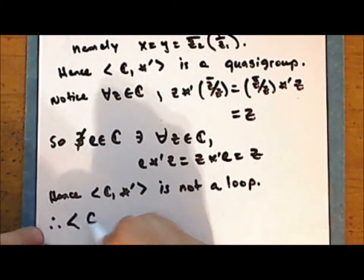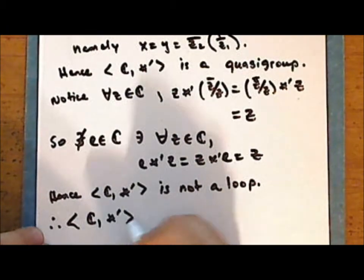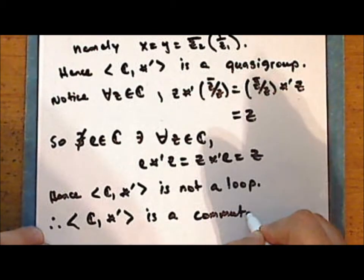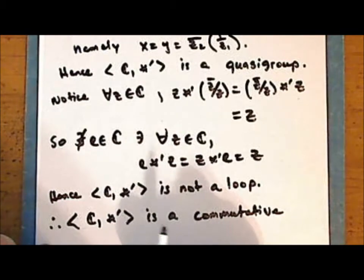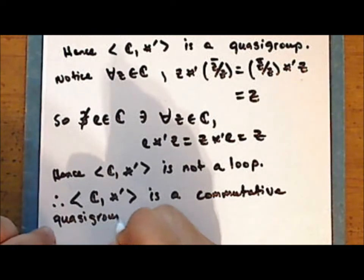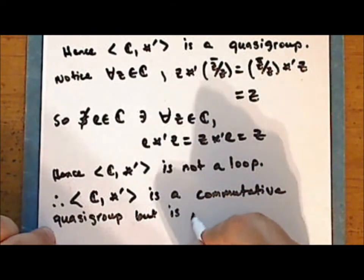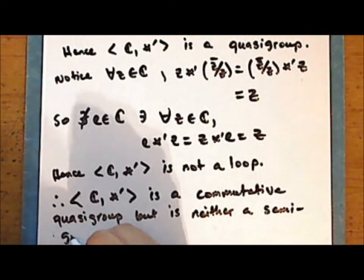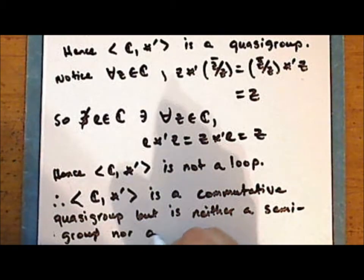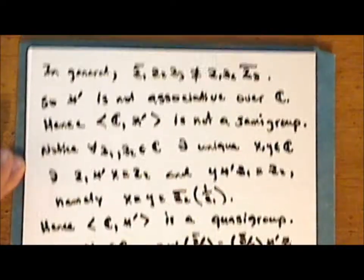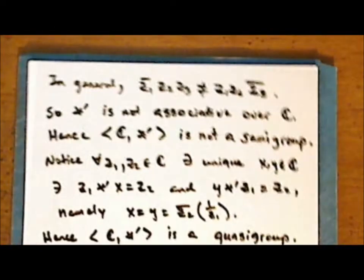We have demonstrated that the complex numbers together with binary operation star-prime is a commutative quasi-group, but is neither a semi-group nor a loop.